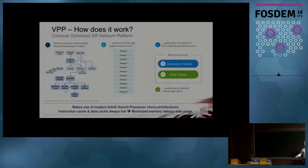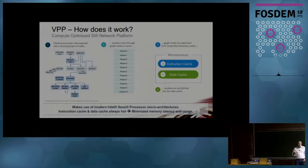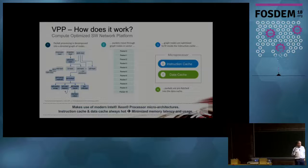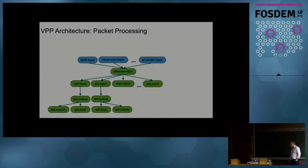Secret sauce number two: we also need to make sure that when we are fetching data to process the packets, the data is in cache as well. In order to do that, we process packets with quad loops or dual loops, and I will show you how.